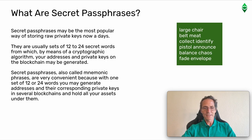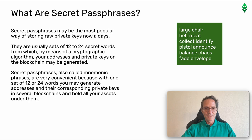What are secret passphrases? Secret passphrases may be the most popular way of storing raw private keys nowadays. There are usually sets of 12 to 24 secret words from which, by means of a cryptographic algorithm, your addresses and private keys on the blockchain may be generated. Secret passphrases, also called mnemonic phrases, are very convenient because with one set of 12 or 24 words you may generate addresses and their corresponding private keys in several blockchains and hold all your assets under them.